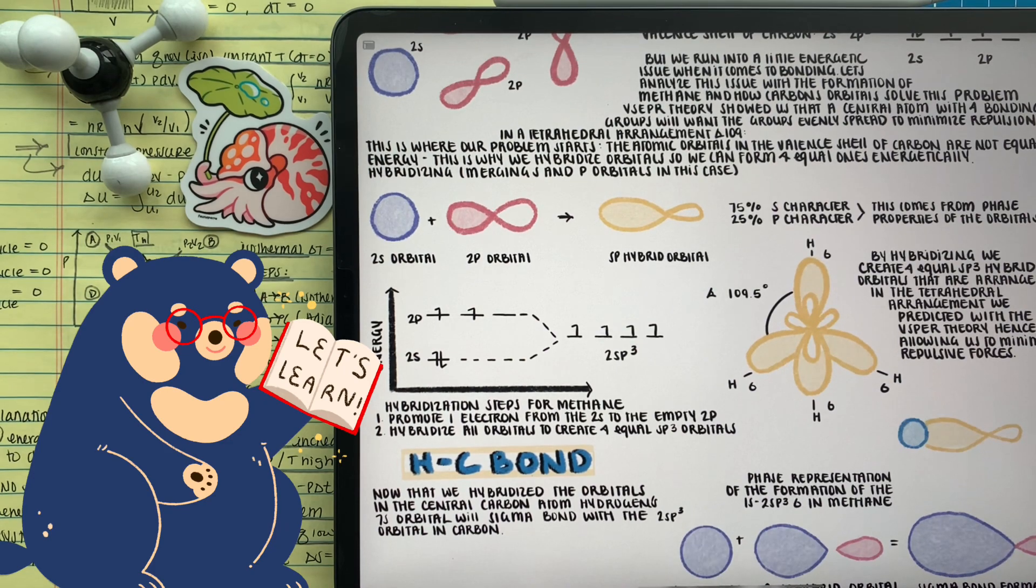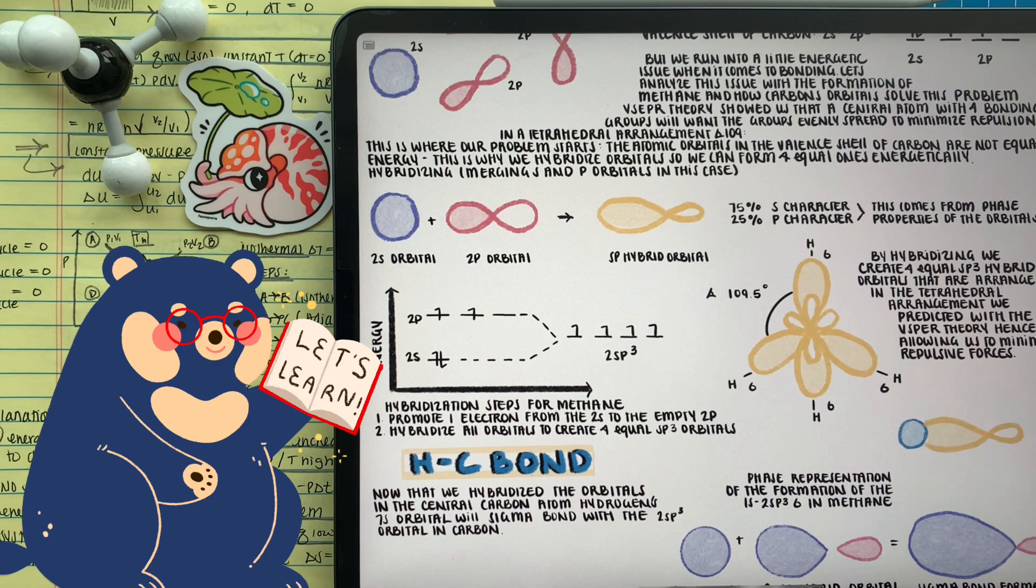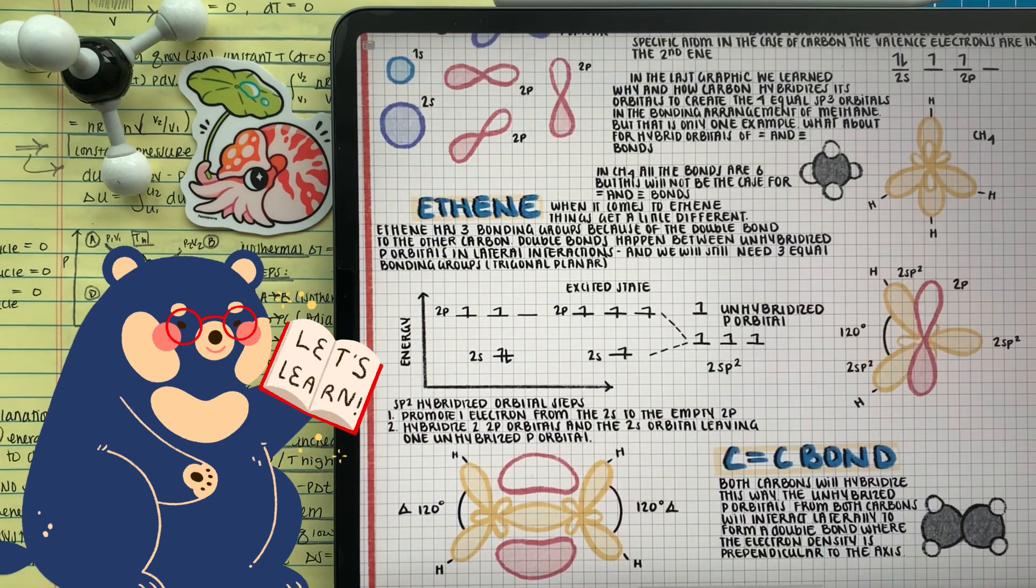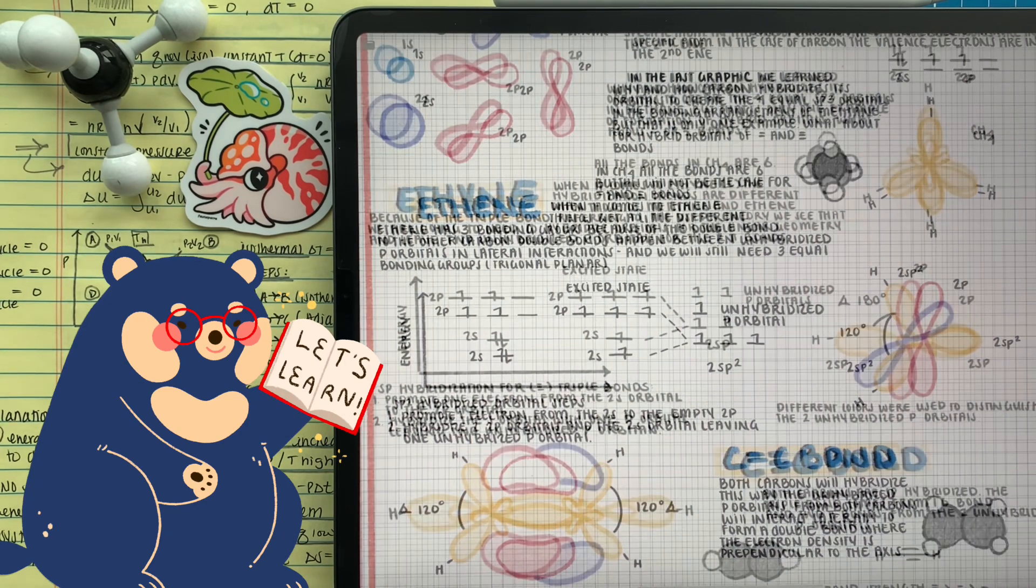Whereas if we have double bonding or triple bonding, we know we're going to have unhybridized p orbitals that partake in the double and triple bonding. If we have double bonding, we're going to have one. And if we have triple bonding, we're going to have two. In the case for double bonds, the orbitals are going to be sp2 hybridized. In the case for triple bonds, they're going to be sp hybridized.